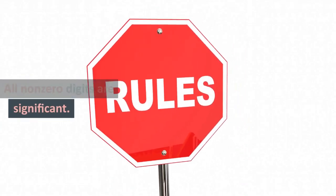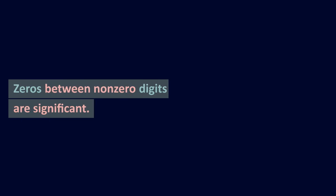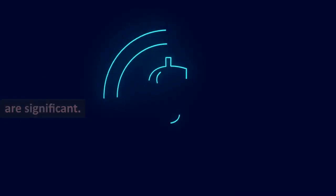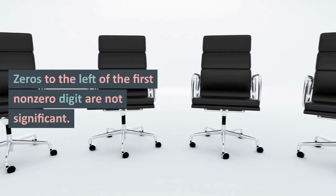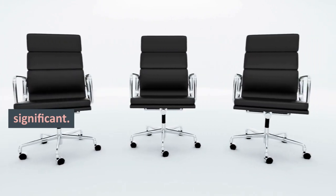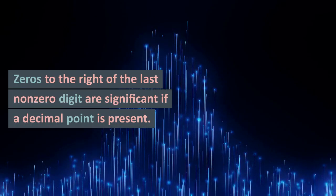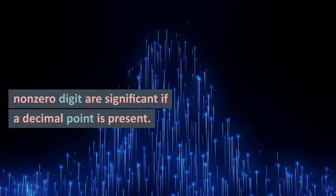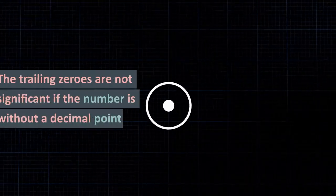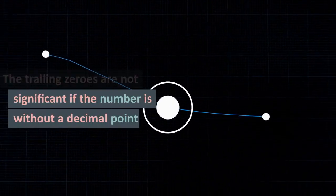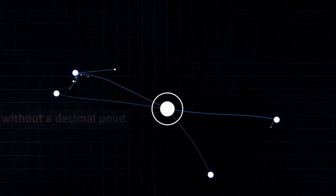All non-zero digits are significant. Zeros between non-zero digits are significant. Zeros to the left of the first non-zero digit are not significant. Zeros to the right of the last non-zero digit are significant if a decimal point is present. Trailing zeros are not significant if the number is without a decimal point.